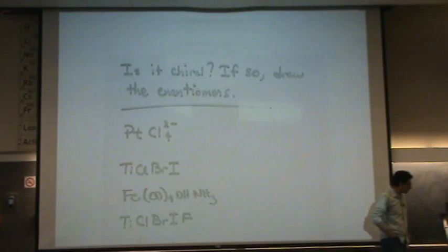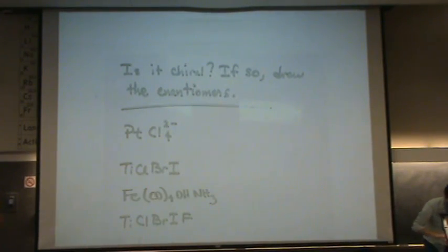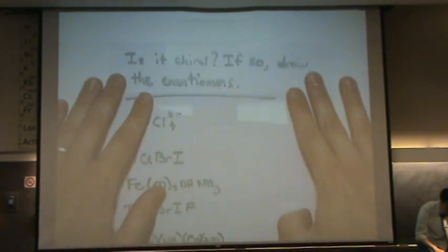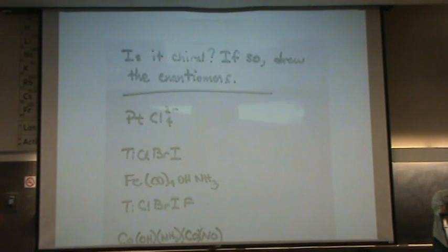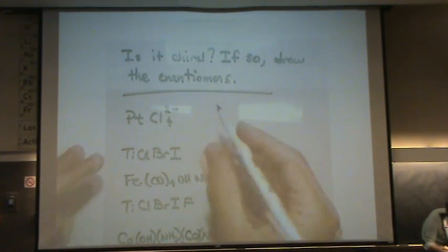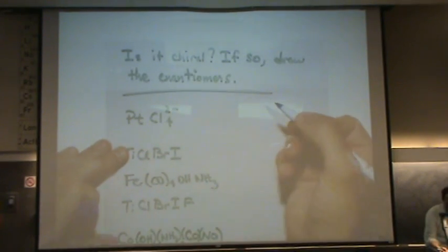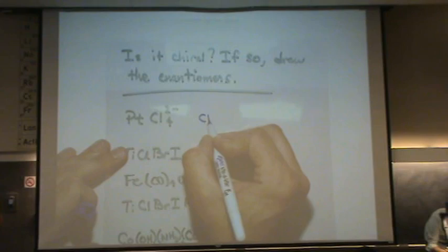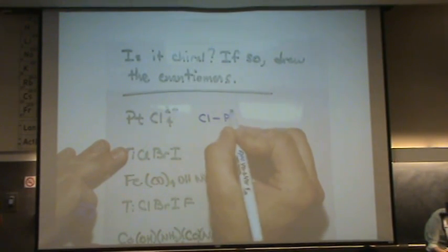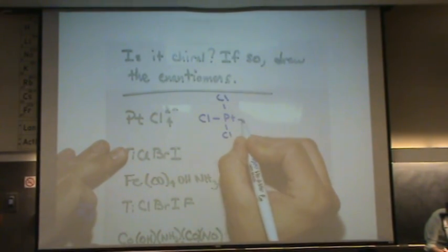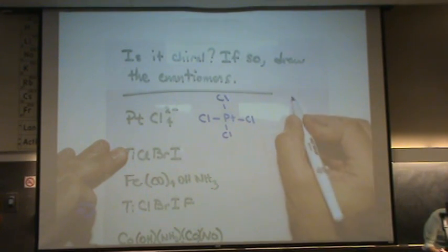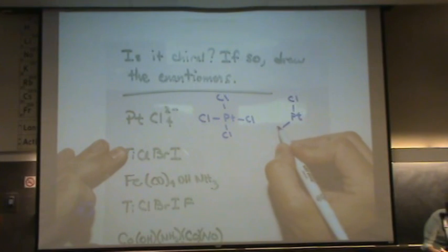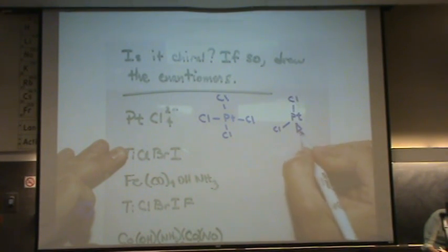So let's try this first one here. I'll draw it out first and I'll say a little bit about it. We've got platinum with four chlorines on it. It doesn't specify if it's tetrahedral or square planar. So it could look like this, square planar, and know how to draw these shapes. Or it could look like this, tetrahedral. We don't know.